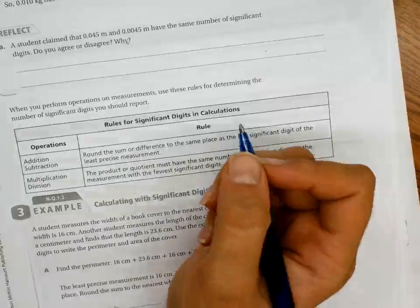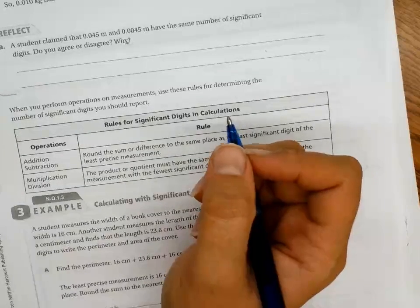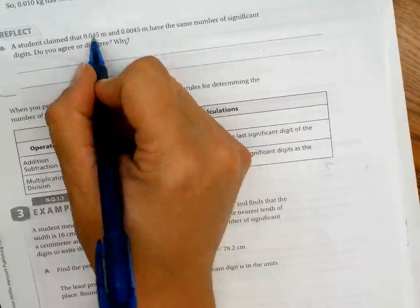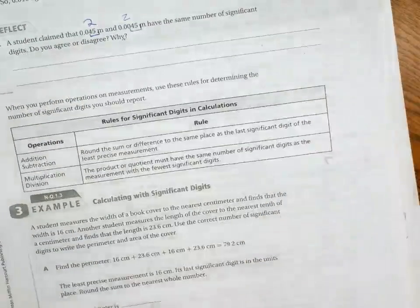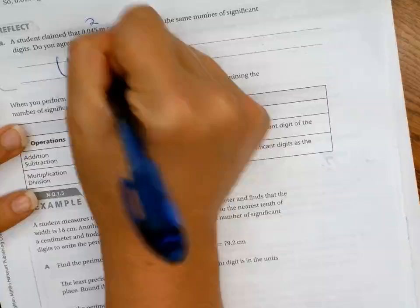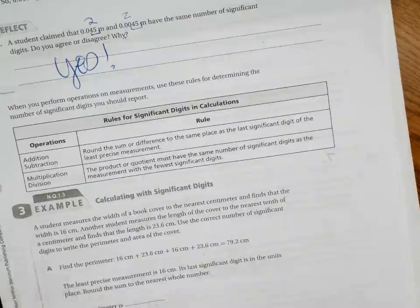A student claimed that 0.045 meters and 0.0045 meters have the same number of significant digits. Do you agree? Do they have the same number of significant digits? Right here has two. How many has there? Two. Two. So yes, they are the same.